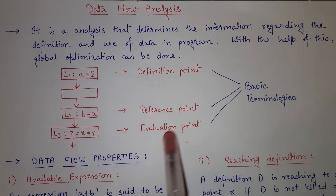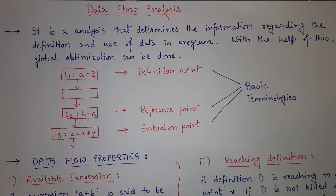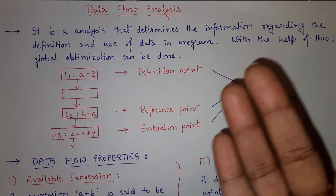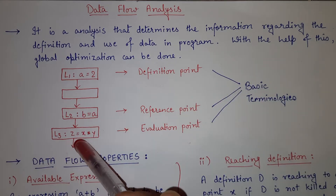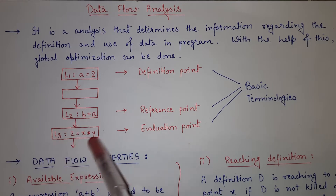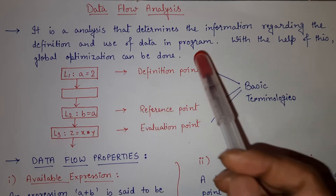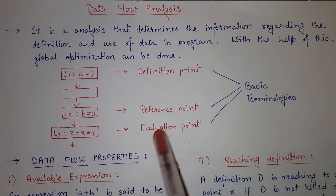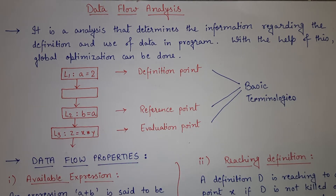We are also having an evaluation point. The evaluation point is where we are evaluating any expression — doing multiplication, division, addition, subtraction, anything. For example, z = x * y. We are evaluating this equation at this step, so it is known as an evaluation point. In data flow analysis, you must know what is a definition point, reference point, and evaluation point because these are the basic terminologies.